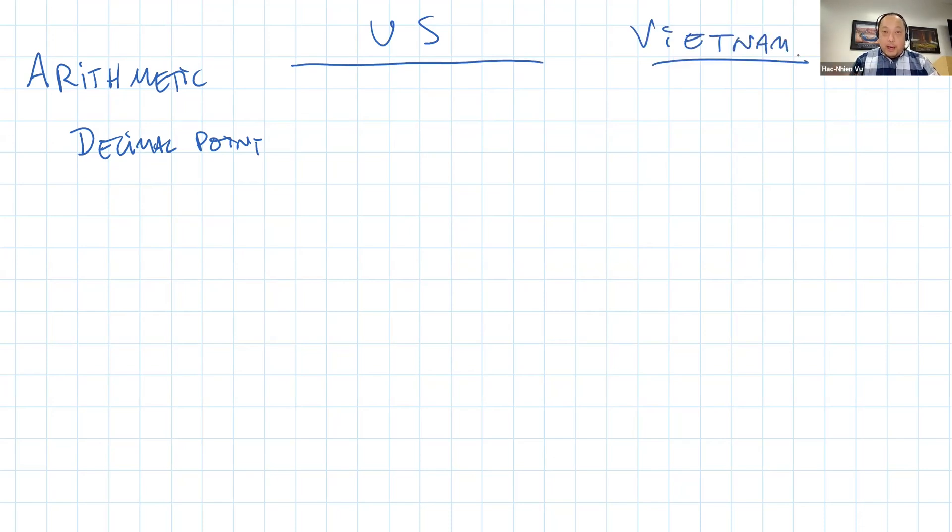In the US, the number pi, for example, is written 3.14. In Vietnam, as in a lot of other countries, it's 3,14.